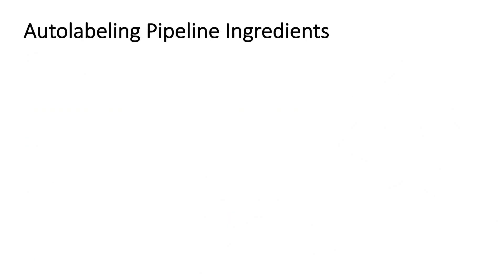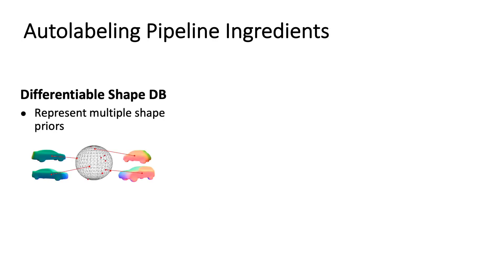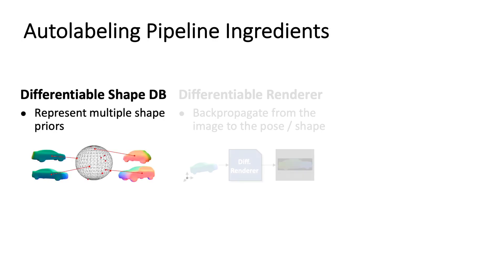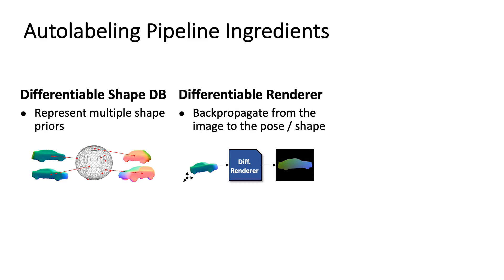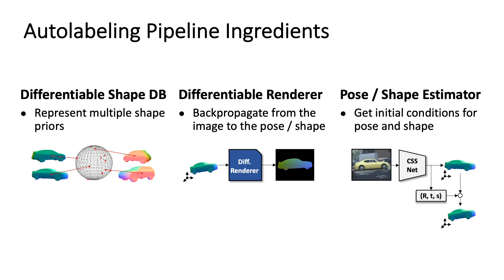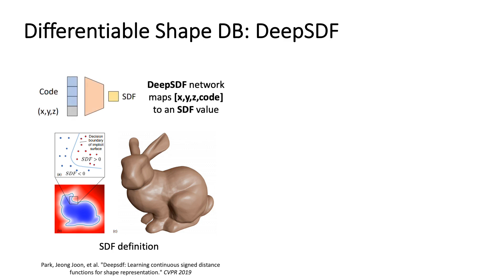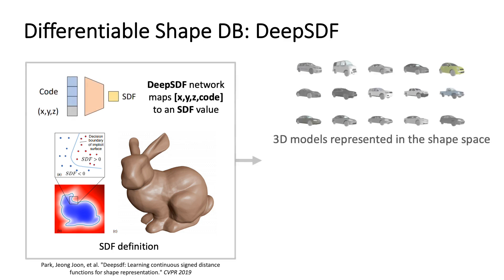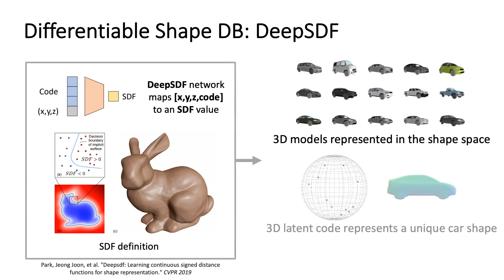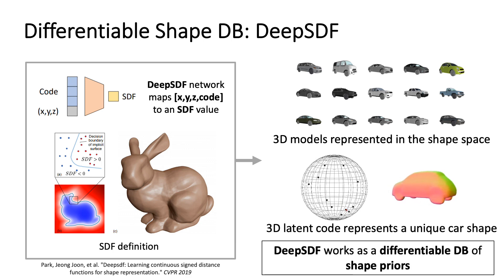Our pipeline consists of three major components: the differentiable database of shape priors to represent possible car variations; a custom differentiable renderer that allows to reason about the 3D appearance from a 2D image; and a pose and shape estimator for initialization of the optimization process. Our differentiable shape database is based on DeepSDF, which transforms input models into signed distance fields where each value corresponds to a distance to the closest surface. DeepSDF embeds a collection of watertight car models into a single neural network, forming a shape space of implicit surfaces.